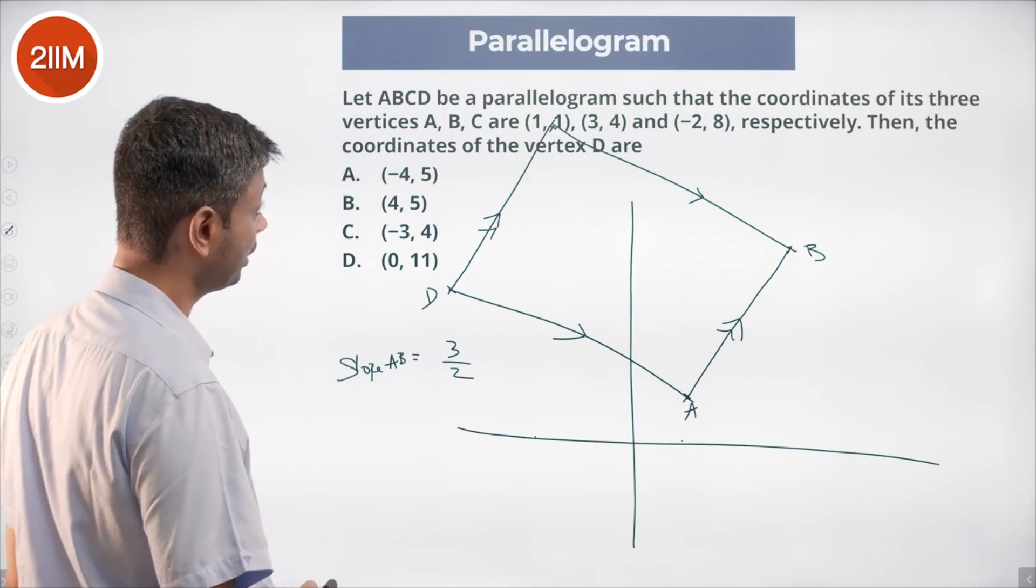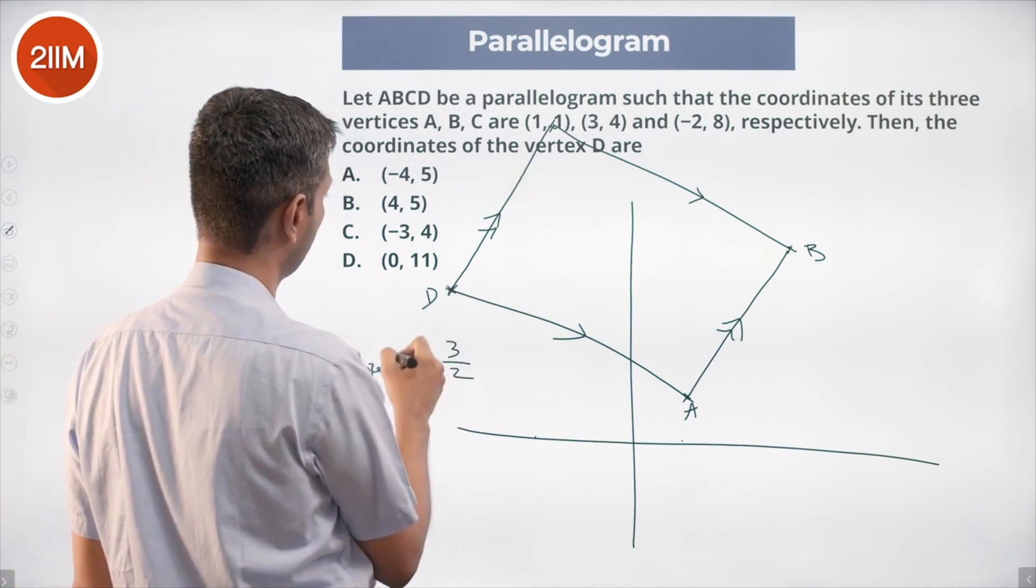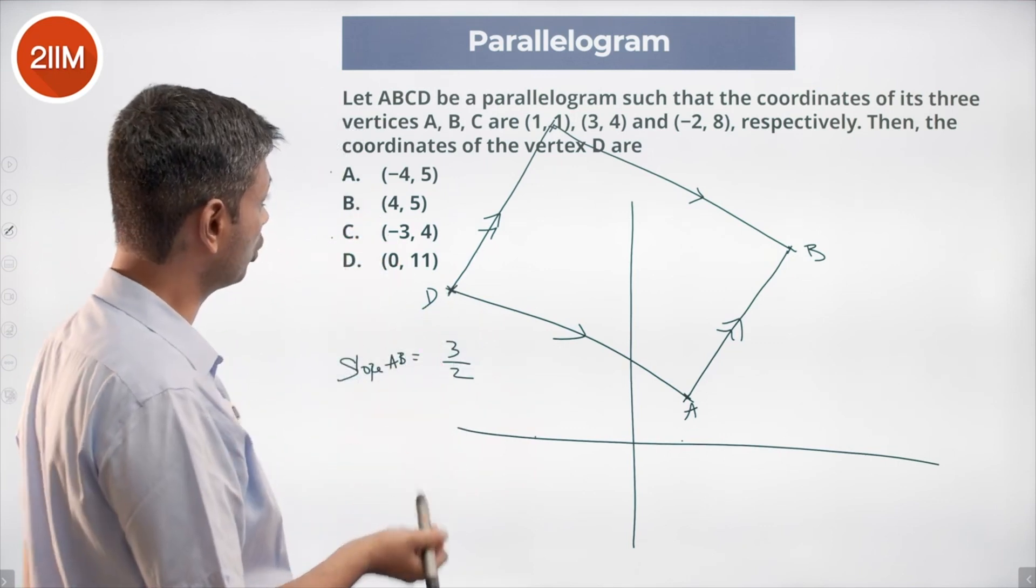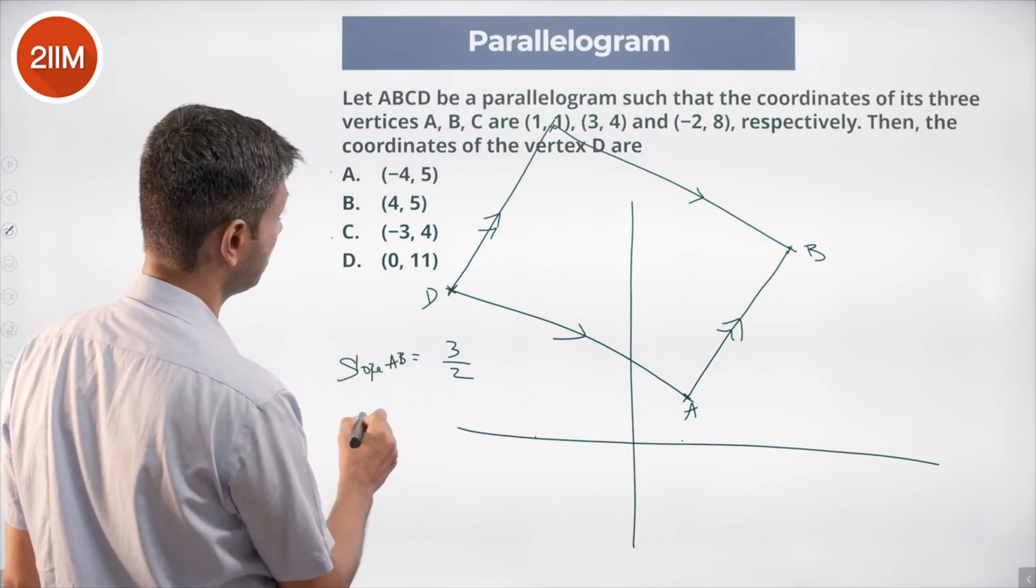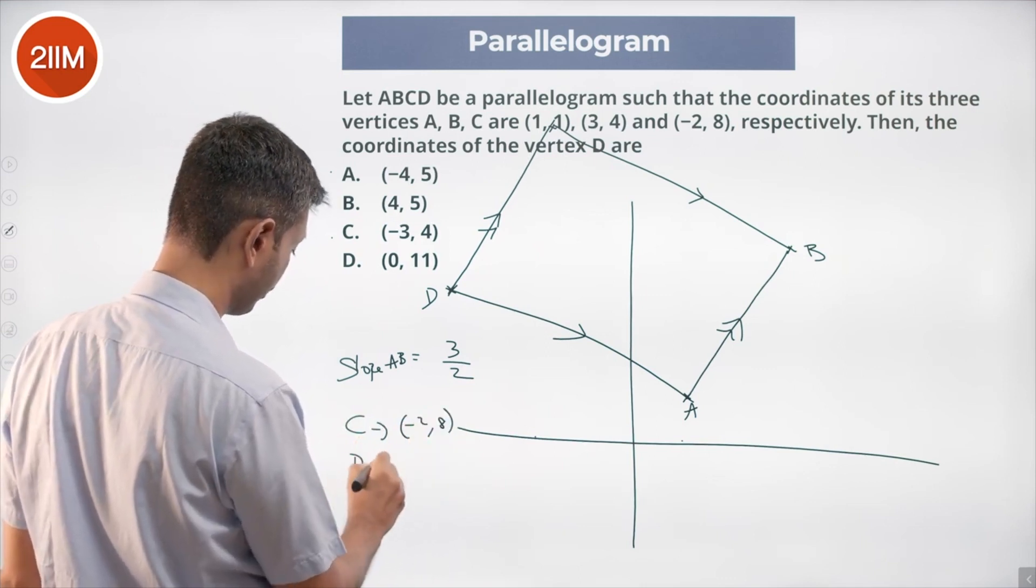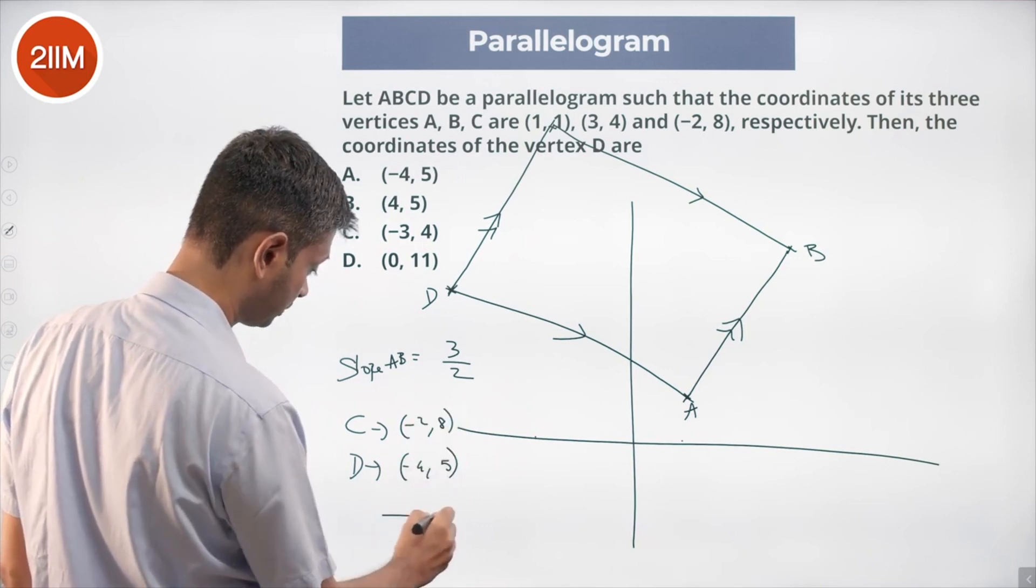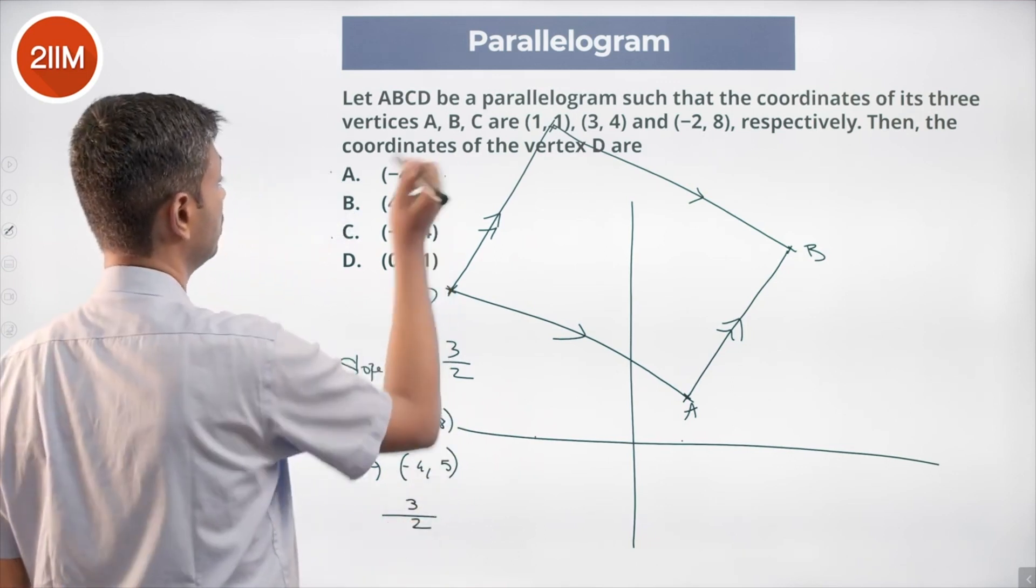CD should be 3 by 2. Guessing, this is -2, should be -4 or -5, -3. One of these two, I'm going for that. I'm plumping for one of those two, so (-4,5). Suppose we put D is (-4,5). C is (-2,8), D is (-4,5). Slope is 8 minus 5 by -2 minus -4, which is 3 by 2. Yes, this works. These two slopes are equal.